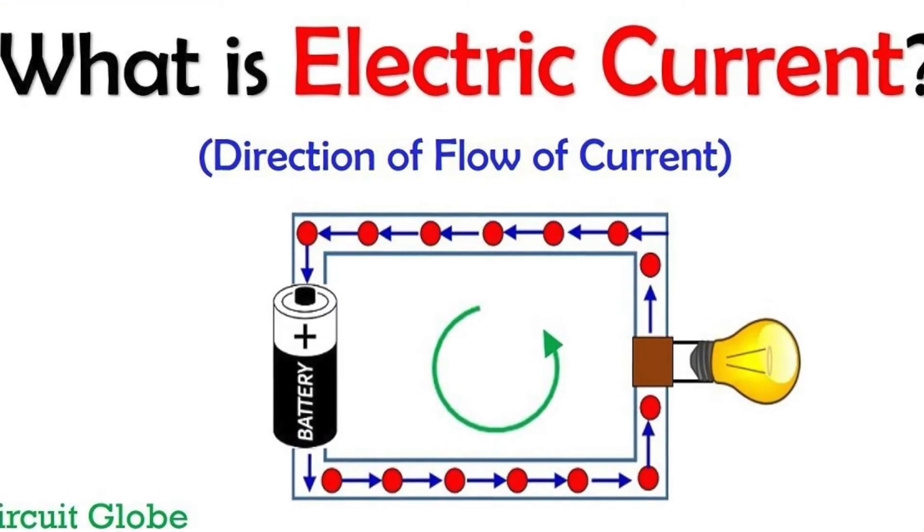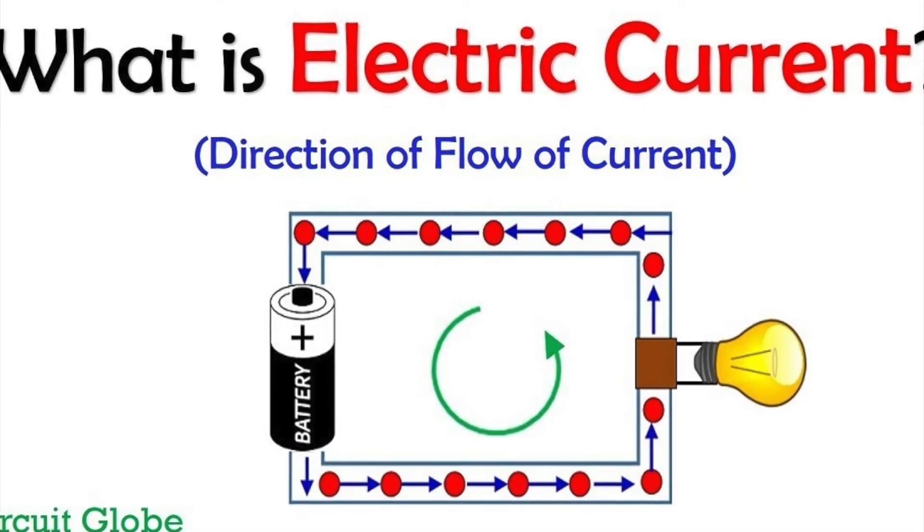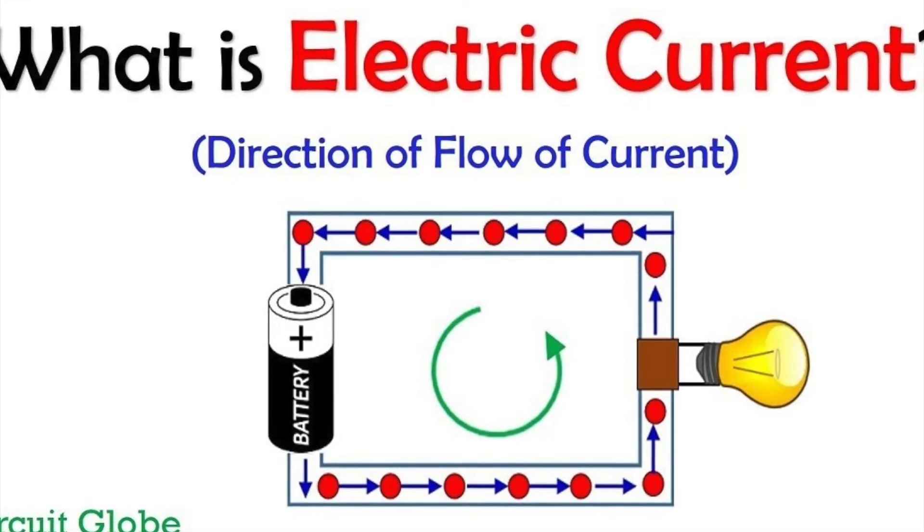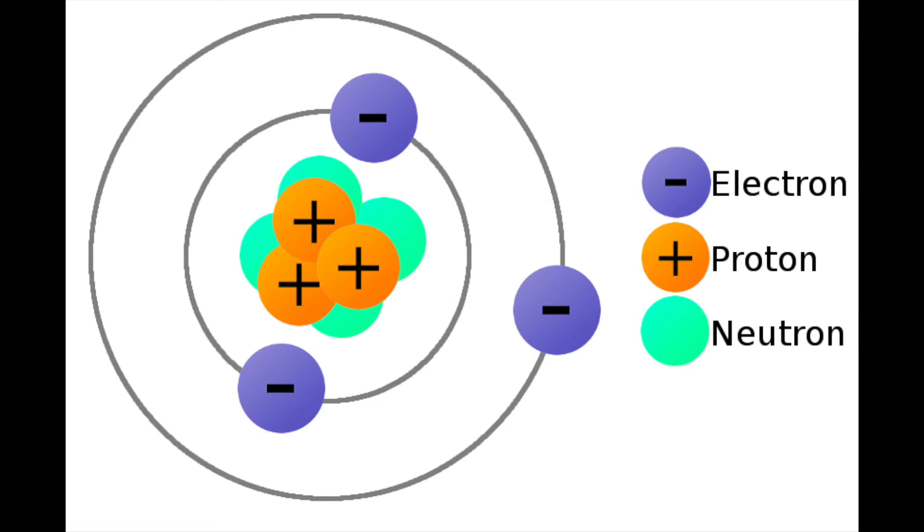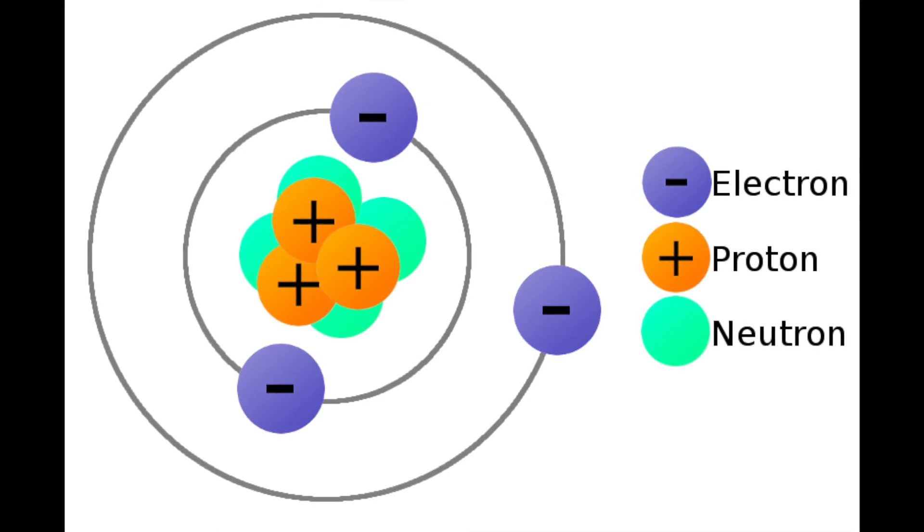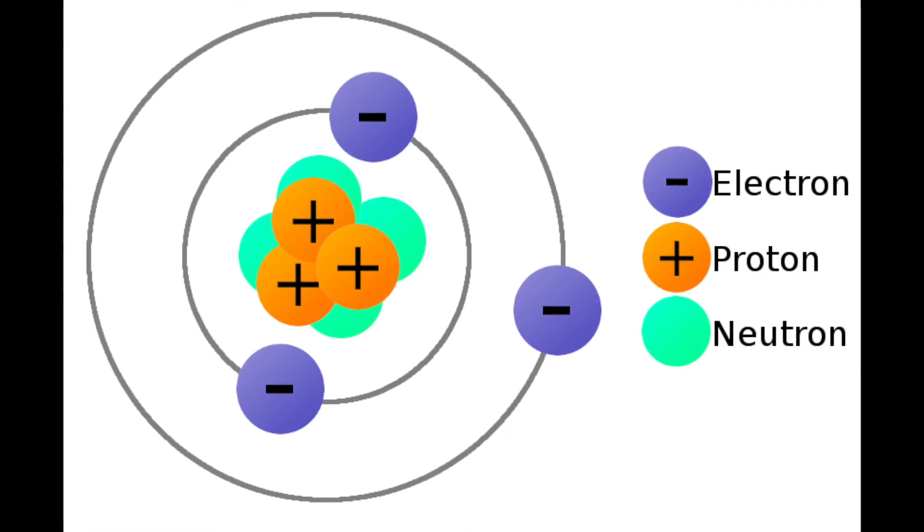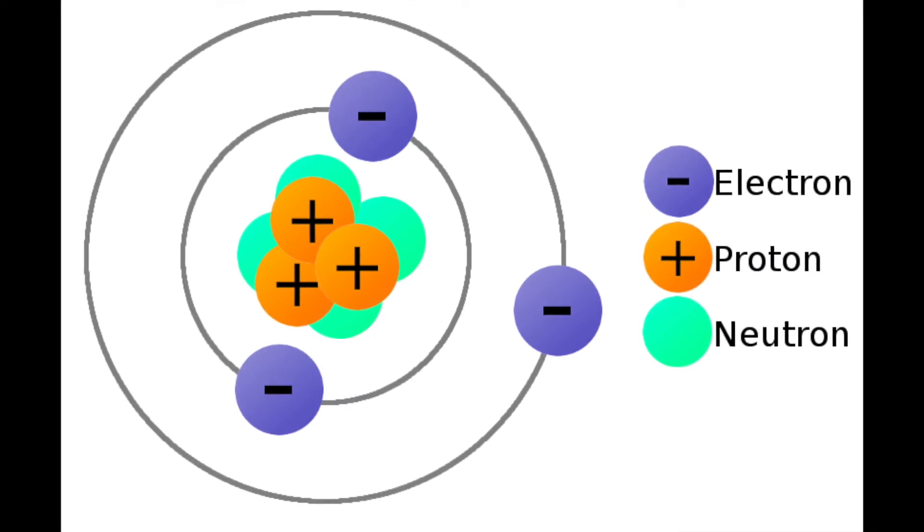Now you all must be thinking that I have told you what electric current is, but I haven't told you what an electron is. Electron is basically a negative particle. It is negatively charged. Its purpose is to neutralize the positive charge in the nucleus.